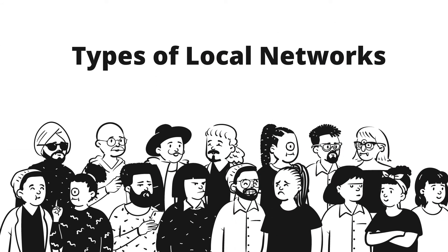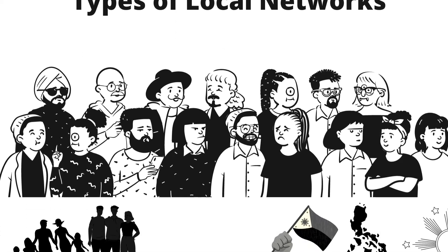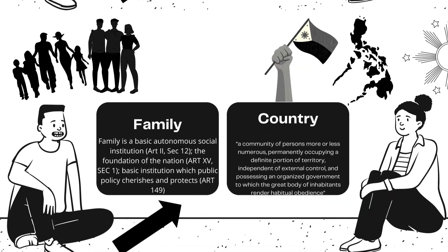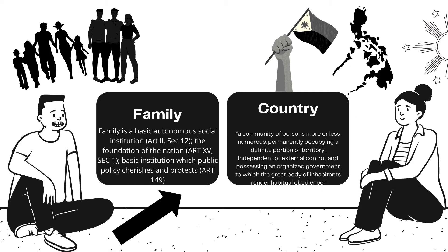So, who are our local networks? First, we have family. Based on the 1987 Philippine Constitution, family is a basic autonomous social institution. It is also considered as the foundation of the nation, and it is the basic institution which public policy cherishes and protects. Family relations include husband and wife, parents and children, ascendants and descendants, brothers and sisters, whether full or half, and others.